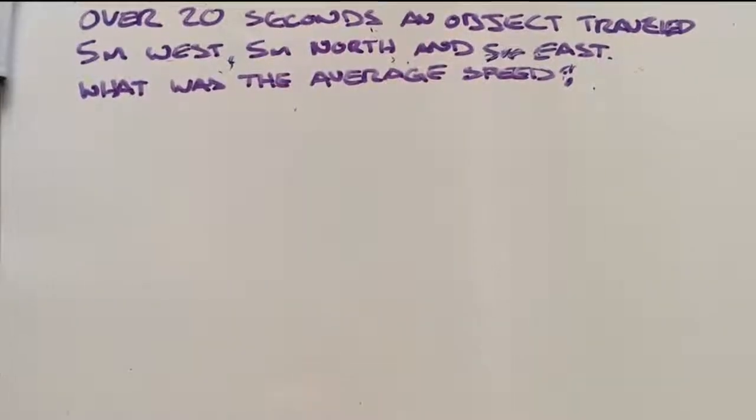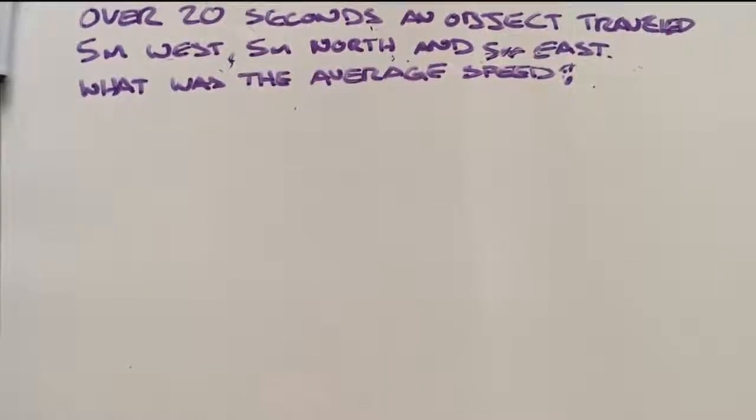Kia ora team! Here we have one of our maths problems. The question is: over 20 seconds an object travelled 5 metres west, 5 metres north, and 5 metres east.